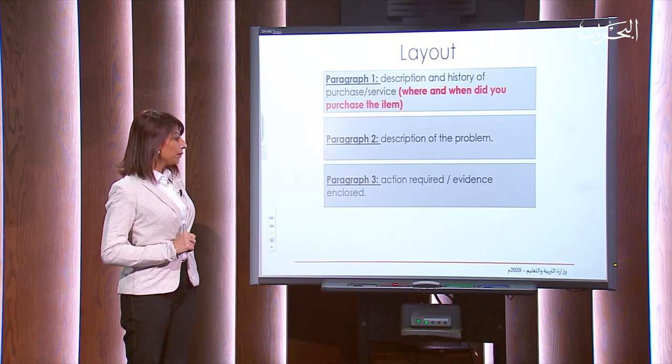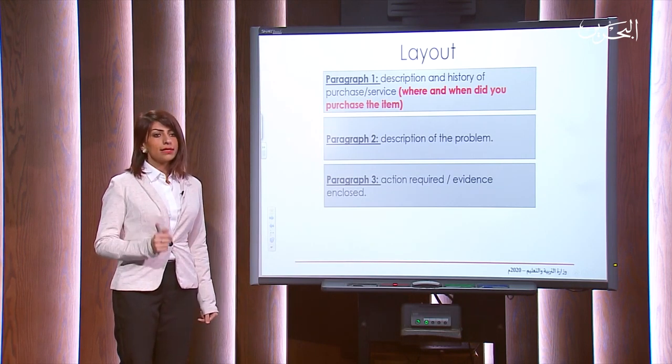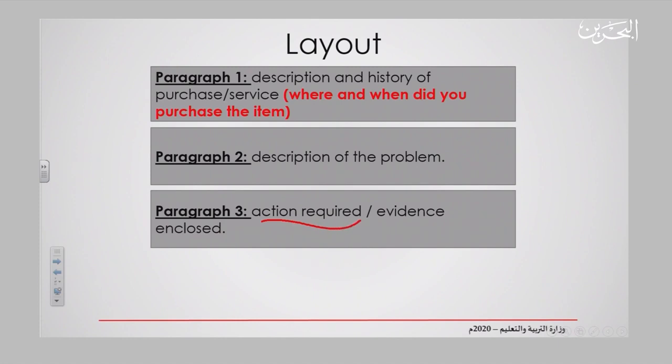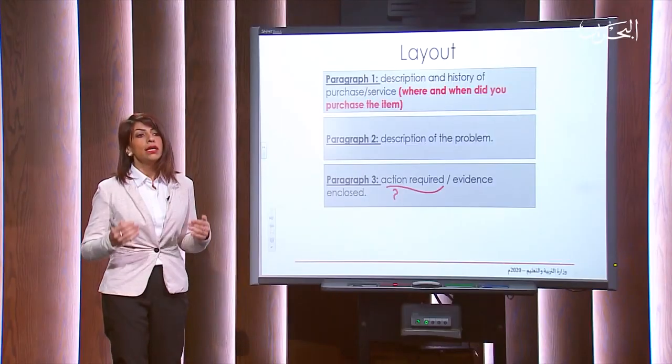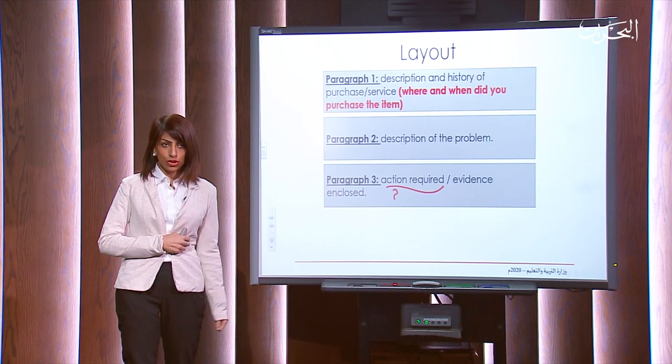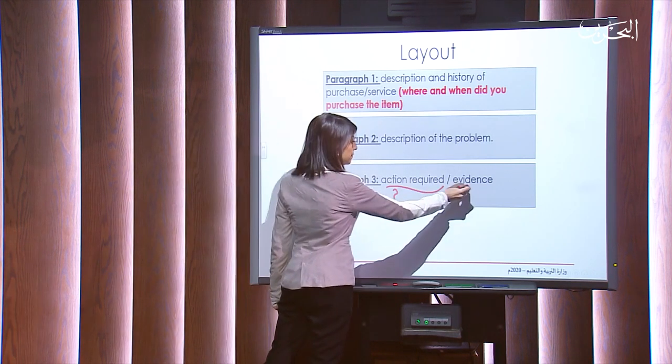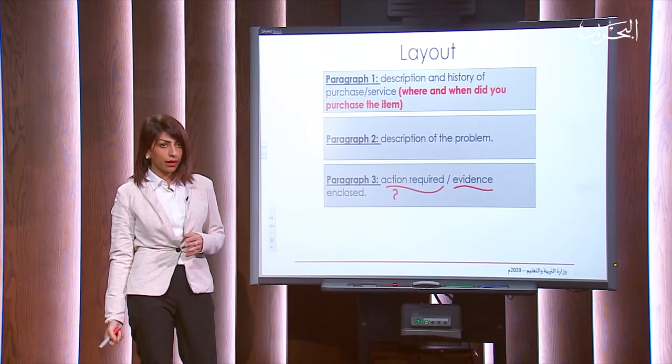In paragraph three, you need to tell the receiver your demand — the action required. What do you want exactly? Do you want a refund, cash back, or to exchange the item? You should tell the shop what would make you satisfied. You also have to enclose evidence. If you made an online purchase, you have a receipt showing the purchase details, or a chat from a social media app. Enclose any type of evidence along with the letter.